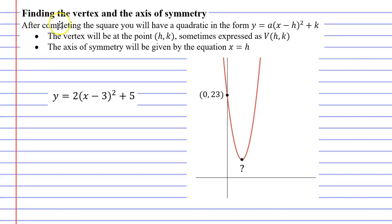In this video we're going to learn how to find the vertex and the axis of symmetry after completing the square. Now in the previous video we learned how to complete the square and we came up with equations very similar to the one you can see here.